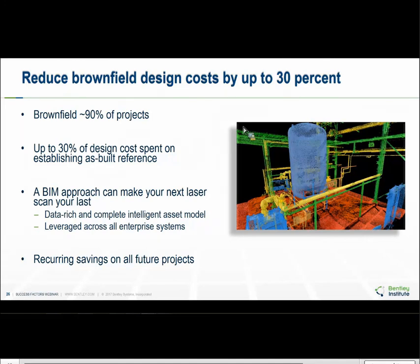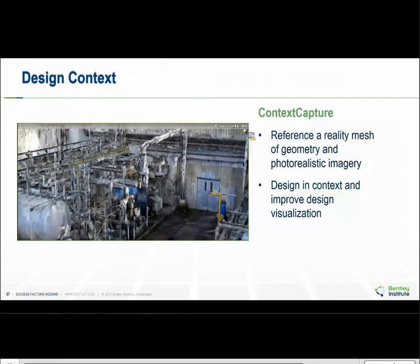Bentley's solution includes software applications to create an accurate 3D model of your existing plant using laser scan data and simple digital photography. Additional applications complete the asset model with automatic production of 2D drawings and linking to equipment specs and other engineering data. Context capture lets us take pictures with just a regular digital camera to create a 3D mesh. We can take a drone to fly around the area and then create some ground-based photos. This creates a 3D mesh, and everything is merged together to show how the new project equipment will look in the existing plant, allowing for better space management and preventing costly clashes during construction.